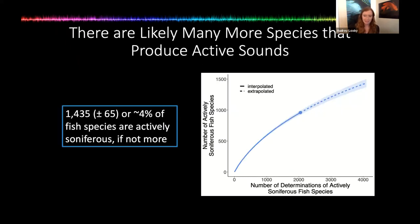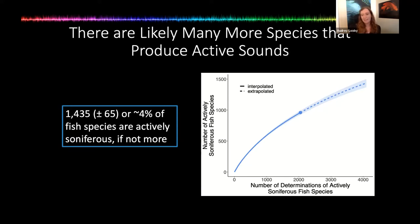Using a rarefaction technique, it was predicted that if the number of examinations resulting in the determination of an actively soniferous fish species were doubled, the number of species making active sounds would also almost double to 1,435 actively soniferous species. To put this in context, FishBase lists roughly 35,000 species of fish, meaning approximately 4% of fish species are actively soniferous. Even this is likely an underestimate based on the lack of an asymptote in the extrapolation curve, with possibly thousands more out there. A global estimate of 1,400 actively soniferous fish species is still substantially higher than currently published estimates.